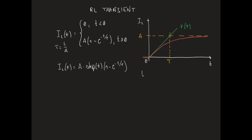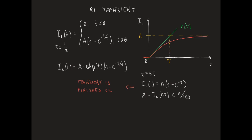Note that for t equal to 5τ, IL of t is equal to A times (1 minus e^(-5)), and the difference between the asymptotic value A and IL of 5τ is smaller than A over 100. So for t equal to 5τ, we say that the transient is finished, or equivalently, the circuit has reached its stationary condition.